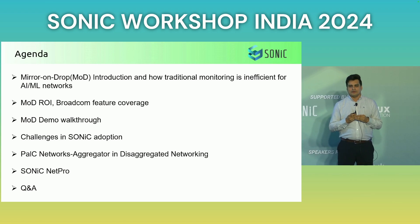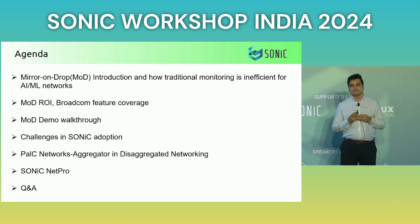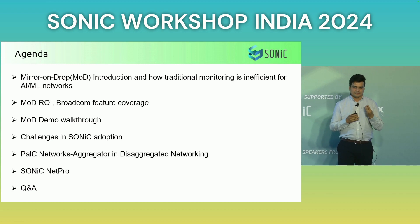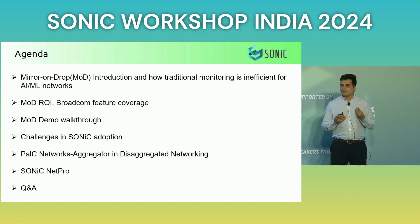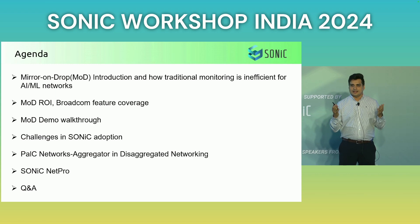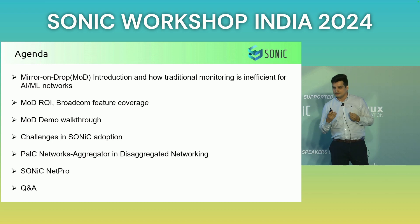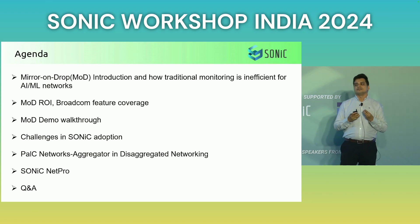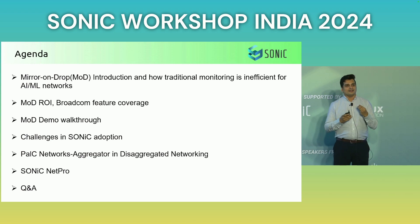What we are doing with Mirror on Drop is very simple. With the help of Broadcom Silicon, before we drop a packet, we take the headers of the packet and send it to a collector with a drop code. That drop code will give you the reason why the packet was dropped.